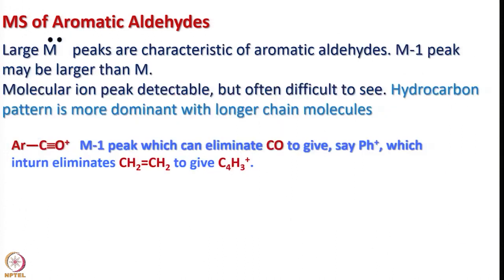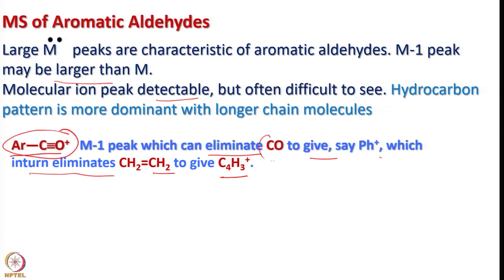Now the mass spectra of aromatic aldehydes. Large M-1 radical peaks are characteristic of aromatic aldehydes; the M-1 peak may be larger than M itself. The molecular ion peak is detectable but often difficult to see, and the hydrocarbon pattern is more dominant with longer chains. The M-1 peak can eliminate CO to give a phenyl radical, which in turn eliminates CH2CH2 to give C4H3+. Elimination of CO and formation of phenyl radicals that further lose ethylene to form C4H3+ cation are quite common.